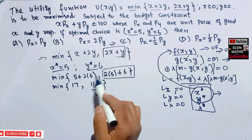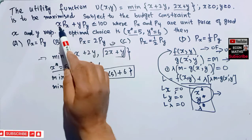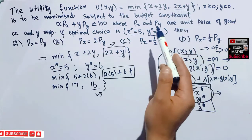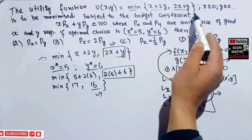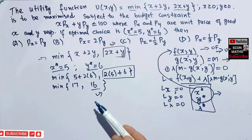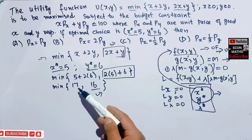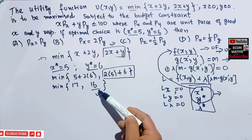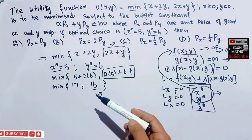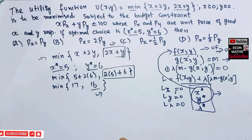Since the minimum of the two expressions is 2x+y, our problem reduces to maximizing 2x+y subject to the budget constraint.